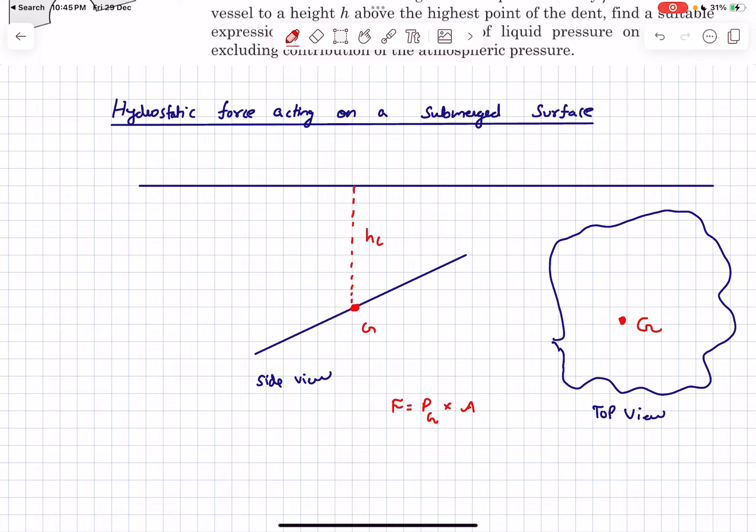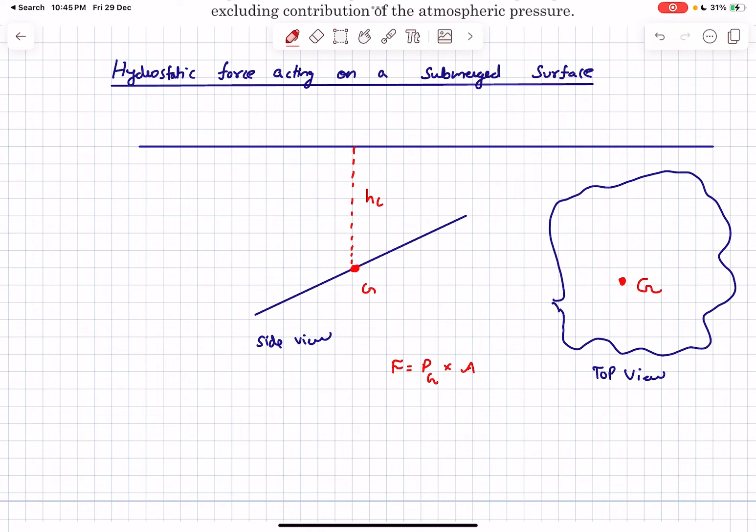I'm not going to prove it in this video because it's going to get long, but if you want a proof video, I'll make a separate one. In this particular case, if I want to write the force F, the net force acting on the surface is P₀ + ρghc times the area of the surface. We are going to be using this result in our problem.